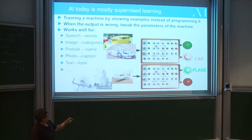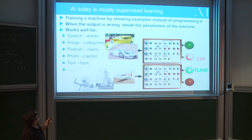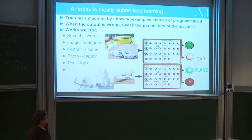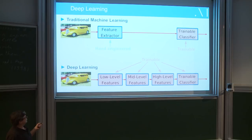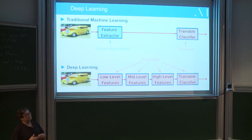This works surprisingly well if you build those things appropriately and have big enough computers — to recognize speech, which essentially amounts to mapping speech signals to words or word sequences; images to categories like cars and airplanes; portraits to names for face recognition; photos to captions. What deep learning is all about is that the function mapping inputs to outputs is represented by a composition of parameterized, individually parameterized functions, each of which has some non-linearity, and by cascading multiple non-linear functions you can represent certain kinds of functions efficiently.